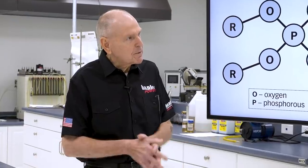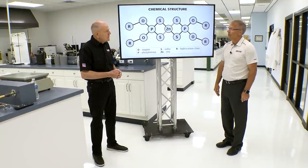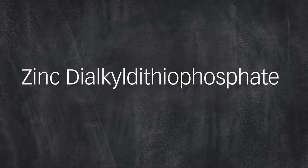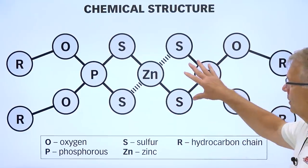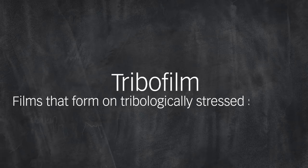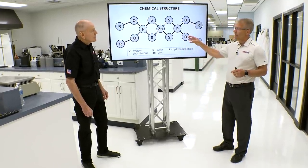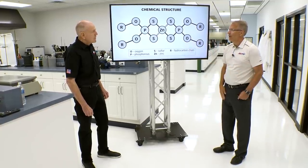ZDDP makes sure those little asperities — the micro differences in the surface of the metals — don't touch, because when they touch, they micro-weld. Breaking a micro-weld sends contaminants into the oil and causes surface degradation. The sulfur and the phosphorus are the functional molecules that help create what's called a tribofilm on the surface, keeping those surfaces separated when the base oil can't do the job. Both base oils and this anti-wear chemistry are important — you can't just have oil, you've got to have the chemistry too.